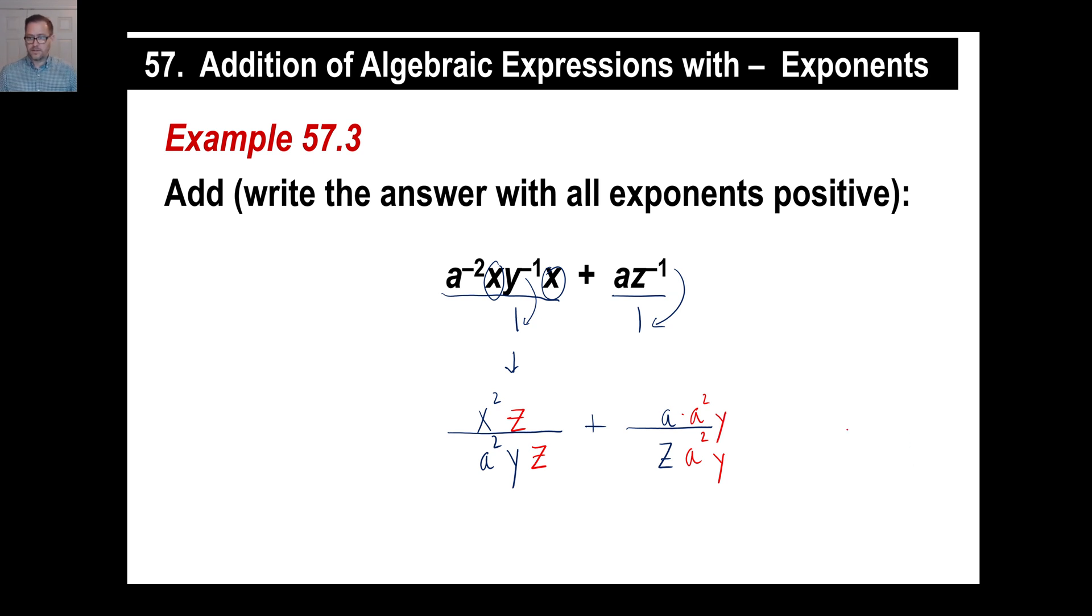Well, we can just go ahead and write the denominator. We know what it is. It's A²YZ for both of those. Over here, we have X²Z.